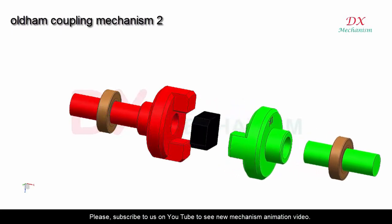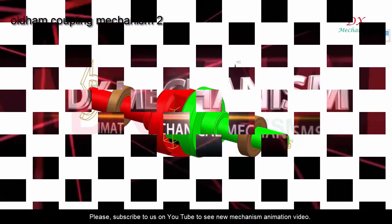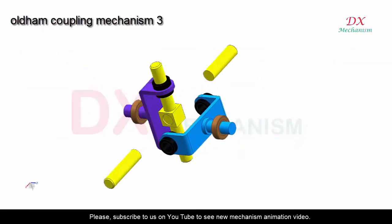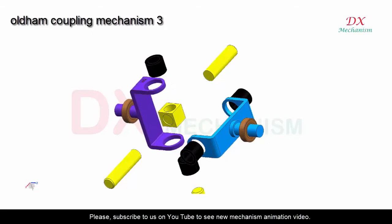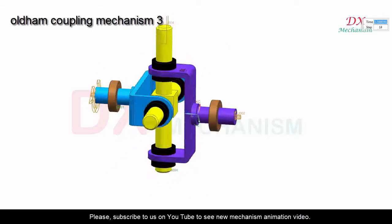Oldham coupling mechanism example two. The black part connects and transfers power between the red and green parts. It slides around the red and green parts. Brown color is the bearing. Oldham coupling mechanism example three. The black part is a bushing linear bearing. The yellow part connects between